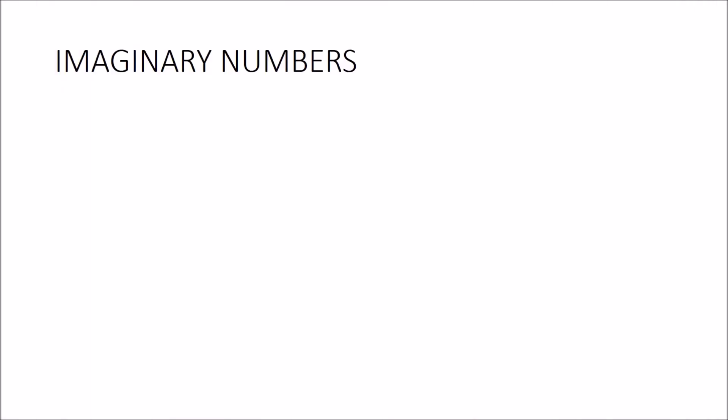This next bit might be a little bit harder — imaginary numbers. For those who've done a little bit of maths, you might have an advantage. Let's start with an equation: x² + 1 = 0. Moving the plus 1, we get x² = −1. Our next step is to take the square root, and we get the square root of negative 1. Try putting −1 into your calculator and finding the square root — you'll find it comes up with an error because this number doesn't exist in the real number system. Be careful with the wording: we're not saying the number doesn't exist; we're saying it doesn't exist in the system of real numbers. It exists in another system — the complex number system.